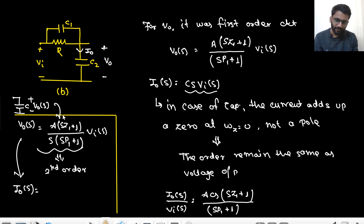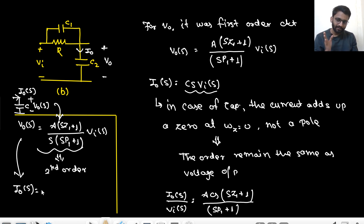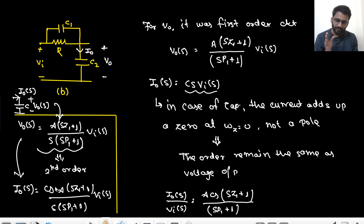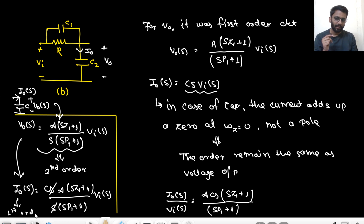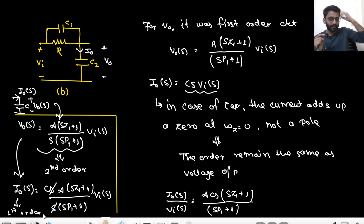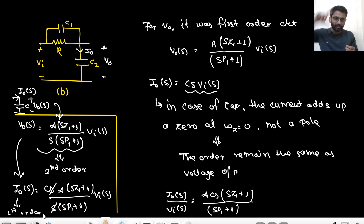If V_out(s) = A × (s/z1 + 1) / ((s/p1)(s/p2) + ...) × V_in(s), then I_out(s) = C·s × V_out(s). The extra factor of s from the capacitor current adds a zero at ω = 0. If there is a pole at ω = 0 in V_out, the s in the numerator and denominator cancel, and the order effectively reduces from second to first order.